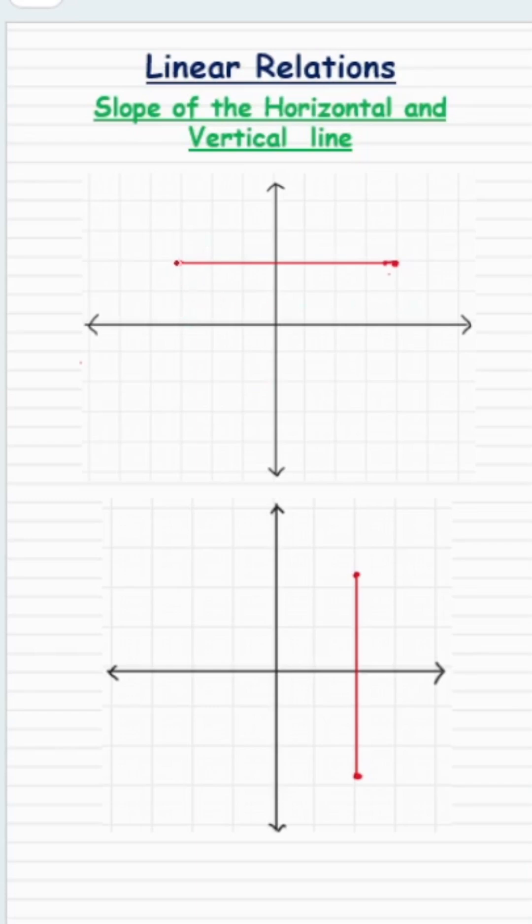For a horizontal line like this, we can say that the values of x are increasing because the line is moving sideways. But the value of y stays the same. There is no change in the value of y.